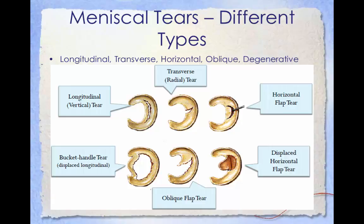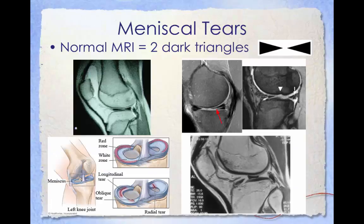Meniscus tears are classified by their shape and location. Different types include longitudinal or vertical tears, transverse or radial tears, horizontal flap tears, a bucket handle tear, oblique flap tear, and a displaced horizontal flap tear. On a normal MRI, there should be two dark triangles representing the menisci; on these MRI pictures, one or both of the dark triangles is missing, indicating potential damage to either one or both menisci.